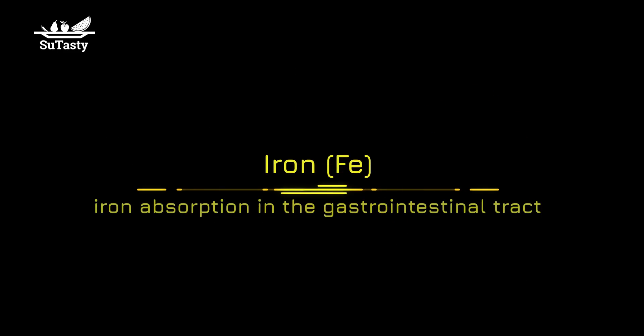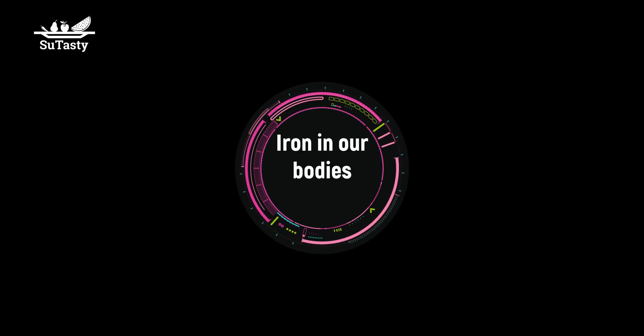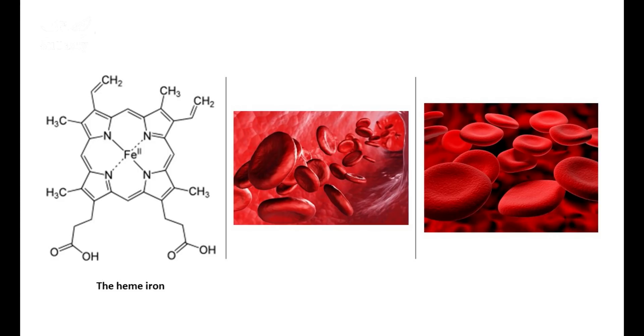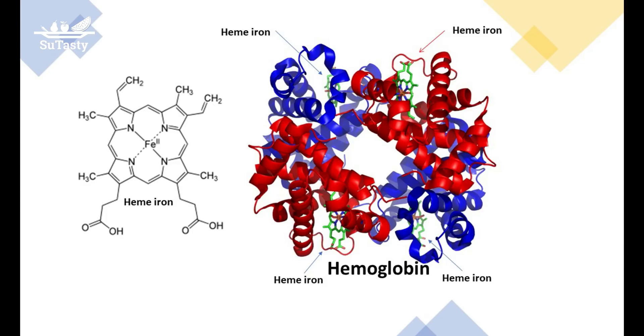Hello, welcome to Sue Tasty. This time we talk about iron absorption in the gastrointestinal tract. Iron is an essential trace mineral needed by our bodies. Iron is a principal constituent of blood as an essential part of hemoglobin in red blood cells. Hemoglobin is the protein containing heme iron in the blood cells. About two-thirds of our body's iron is in hemoglobin.